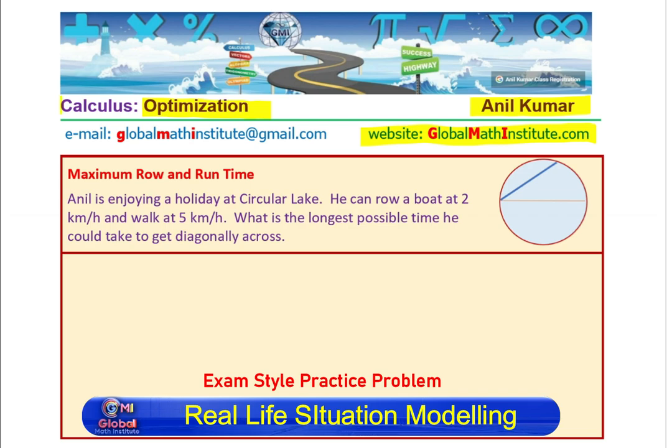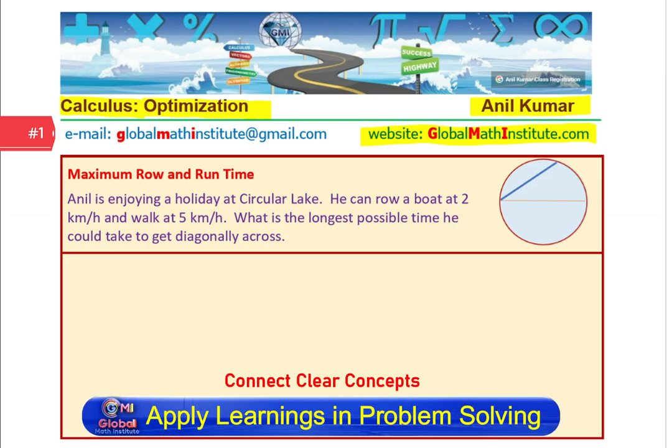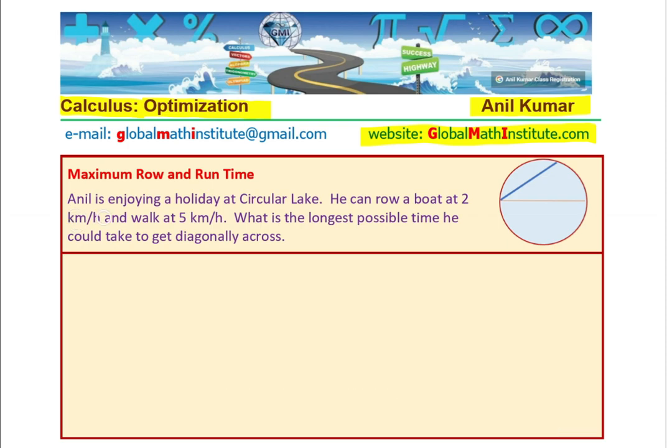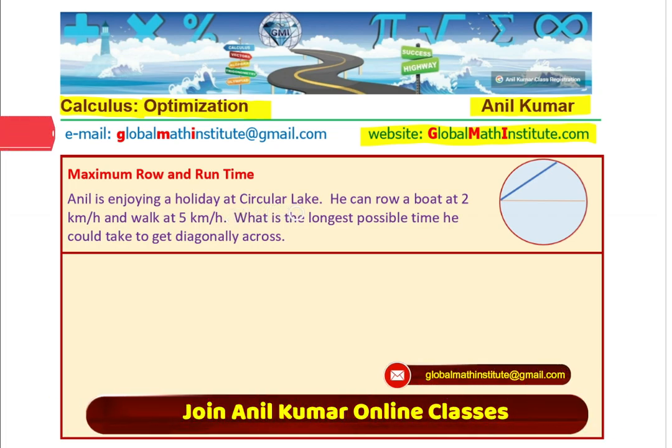Very interesting topic in calculus. This question has also been shared by one of my students. This is really a difficult problem. Here, we are going to relate many parameters. Let us see how it unfolds. What is the longest possible time he could take to get diagonally across?